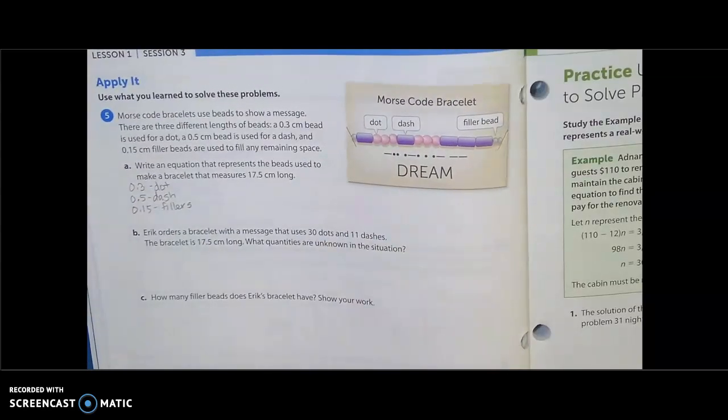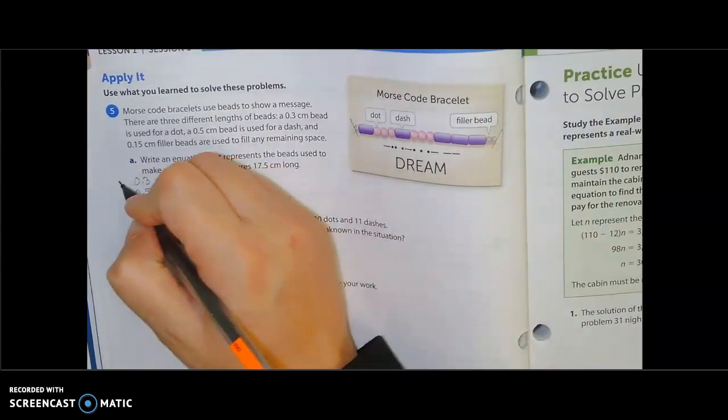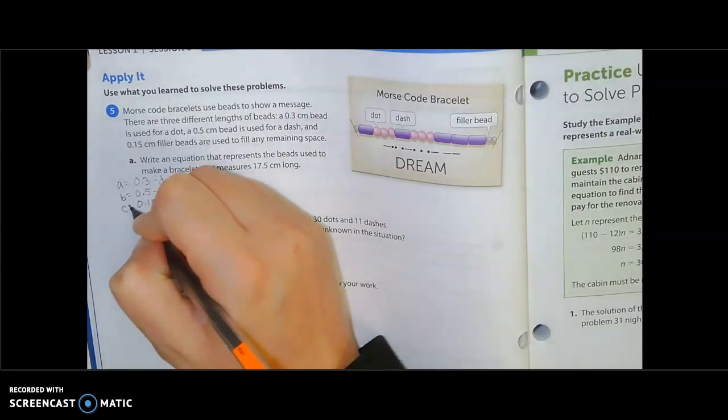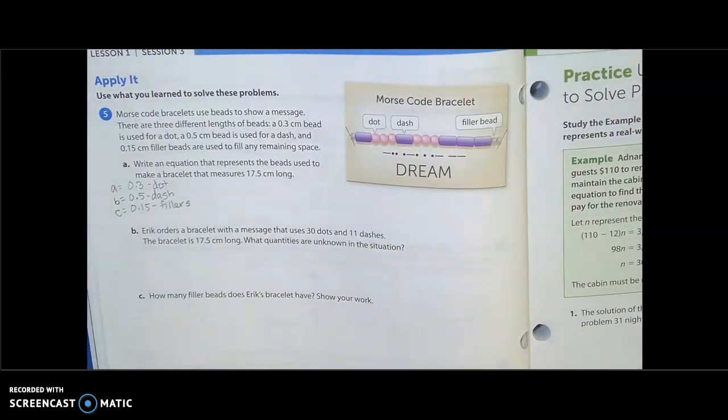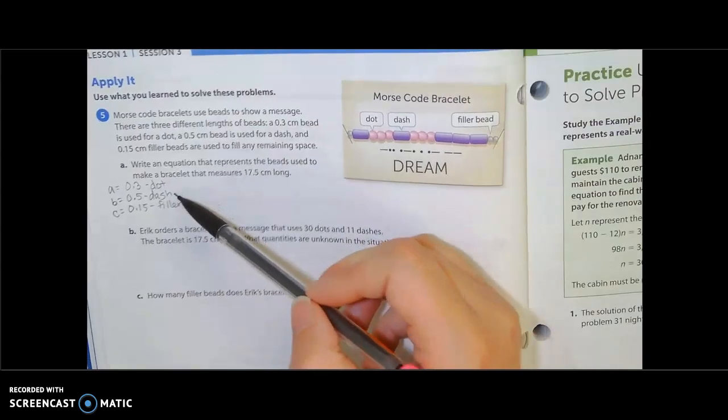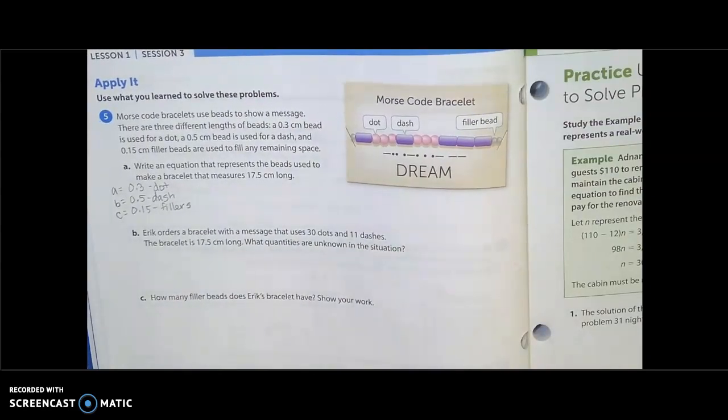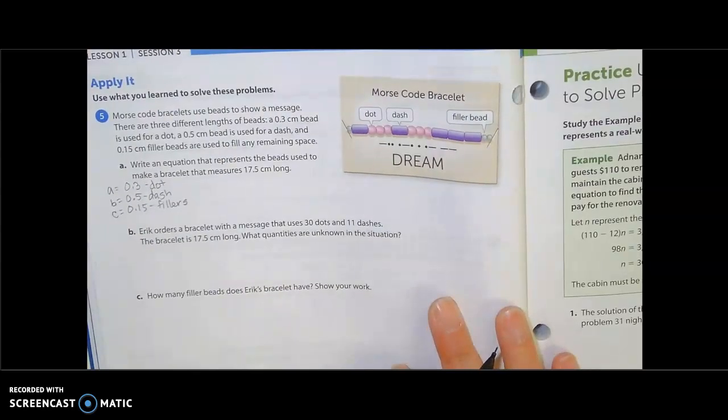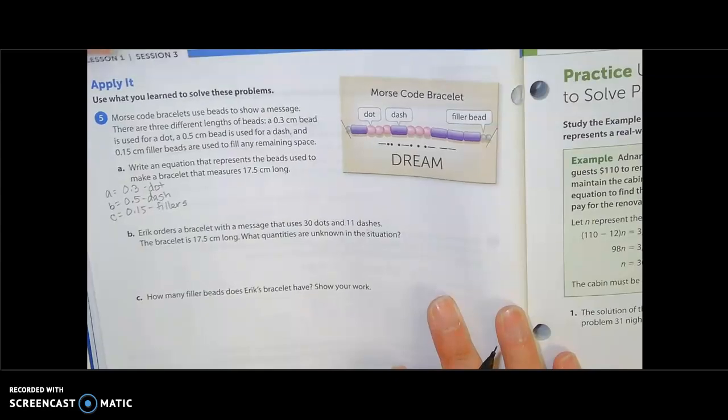We could go with A, B, C, right? And we could say that this is A, this is B, and this is C. You could do X, Y, Z. You could do T, H, and F. However you want to do it, we just got to define it. So our A is going to represent our dot, our B is going to represent our dash, and C is going to represent our filler.